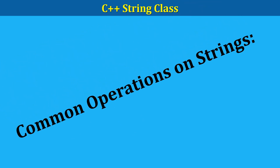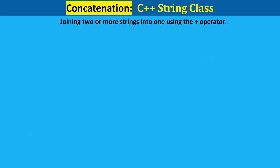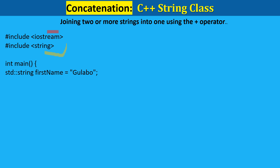Now let's look at common operations on strings. The first is concatenation — joining two or more strings into one using the plus operator. This operation creates a new string by appending one string to another. Include iostream for input and output, then include the string library to use the standard string class. In main, declare and initialize the first name: the line creates a string variable first_name.